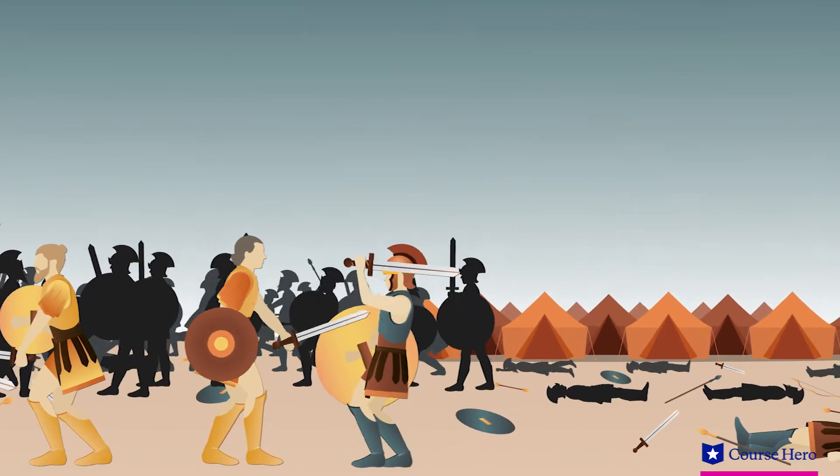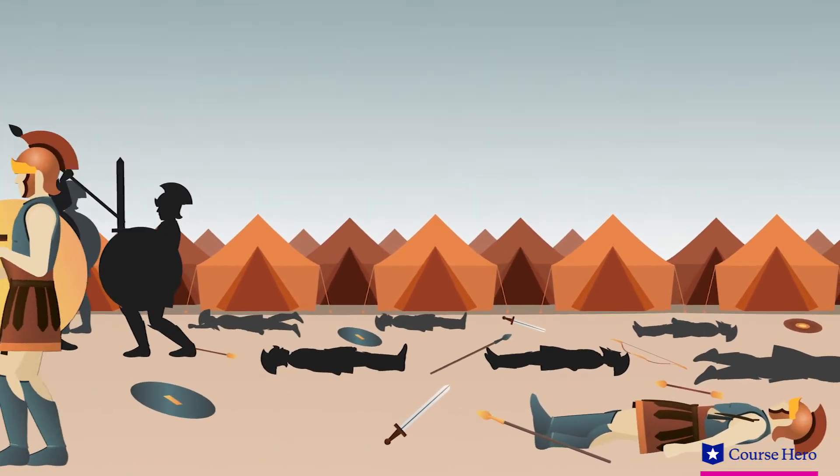He doesn't dare openly defend the Achaeans for fear of Zeus' punishment. With Poseidon's support, Idominius and other Achaeans kill and wound many Trojans.